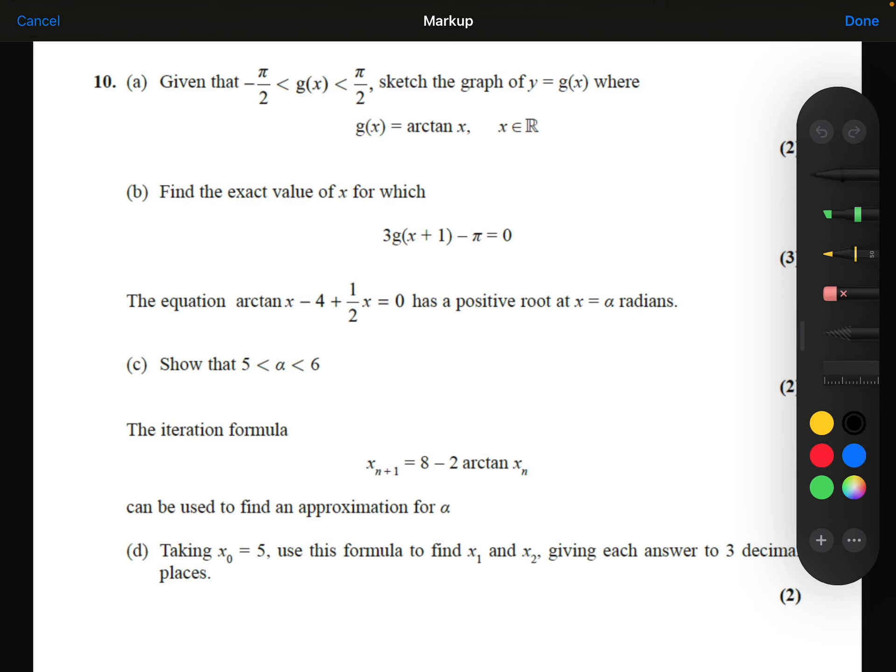So first of all, let me just draw a little graph of tan x where it's between minus pi over 2 and pi over 2. So my tan x graph would look like this.